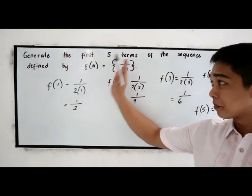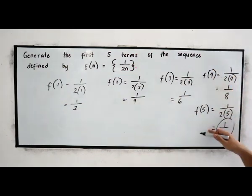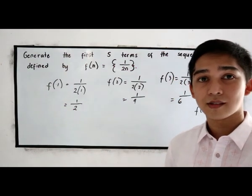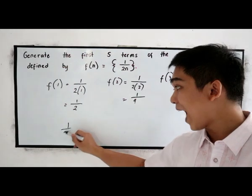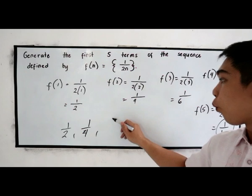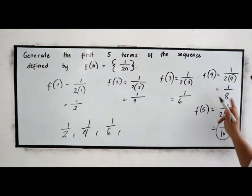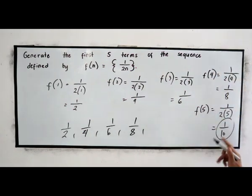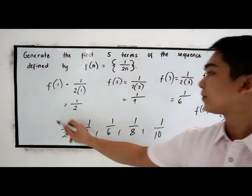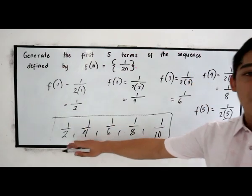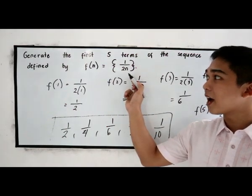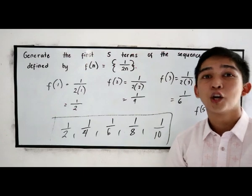First five terms. The first, second, third, fourth, and fifth. Now let us try to write our sequence. So our sequence is 1 half, 1 fourth, 1 over 6, 1 over 8, and 1 over 10. This is now our first five terms of the sequence defined by f(n) is equal to 1 over 2n.